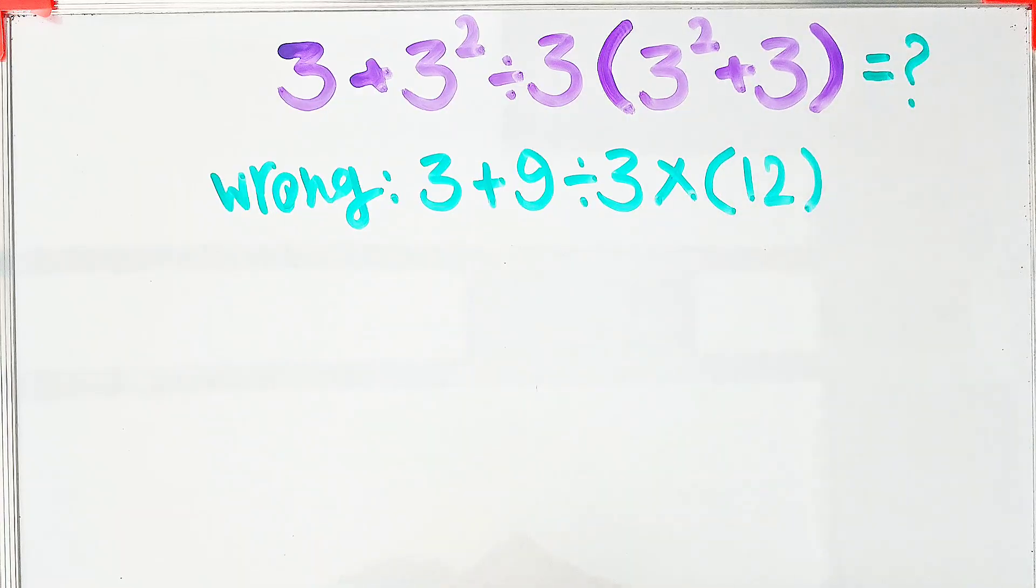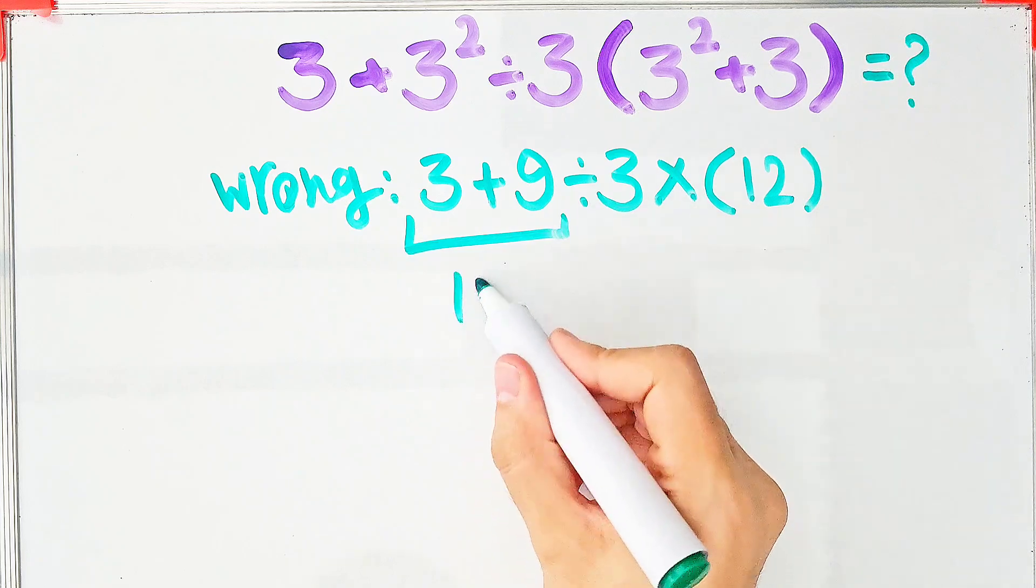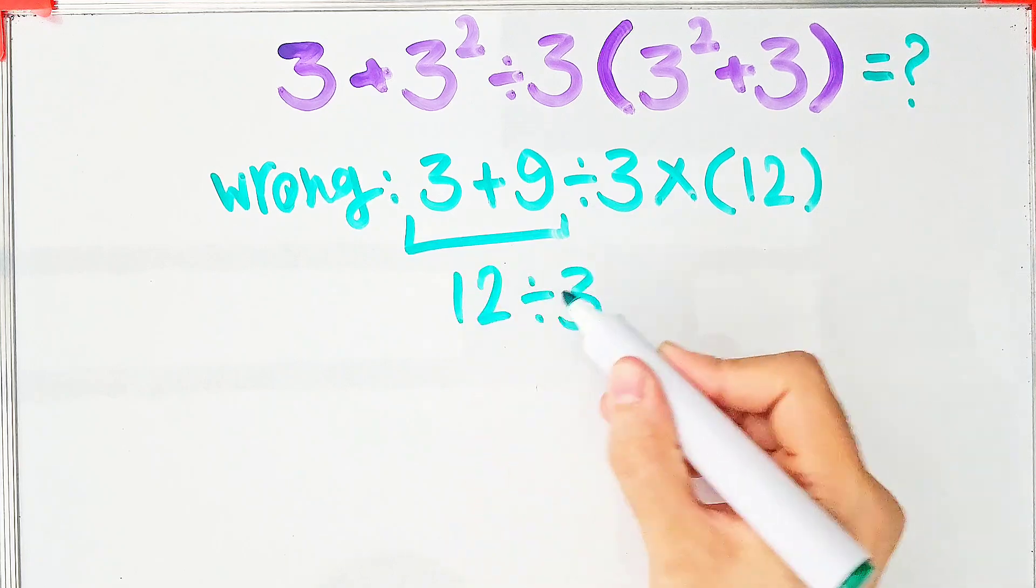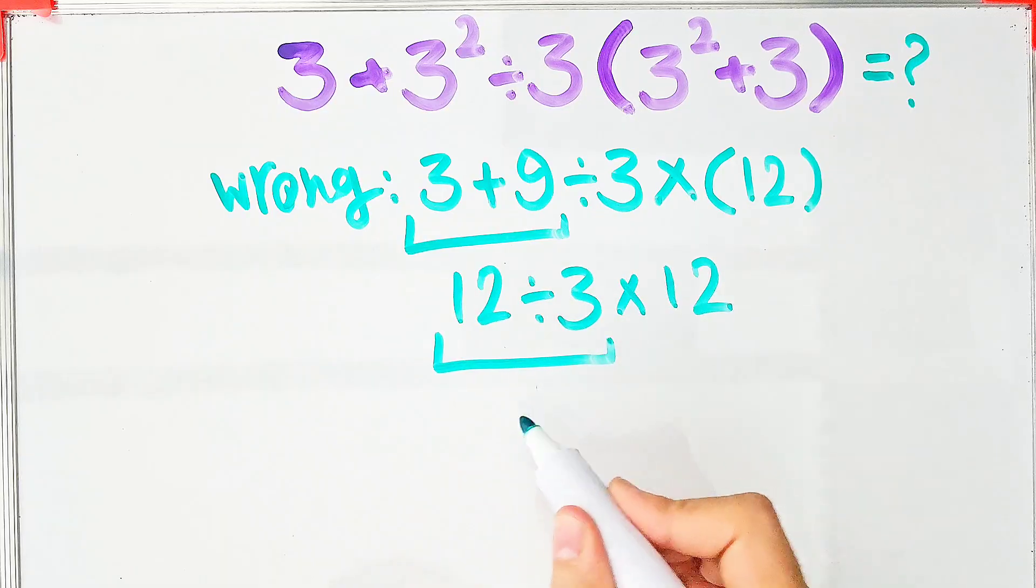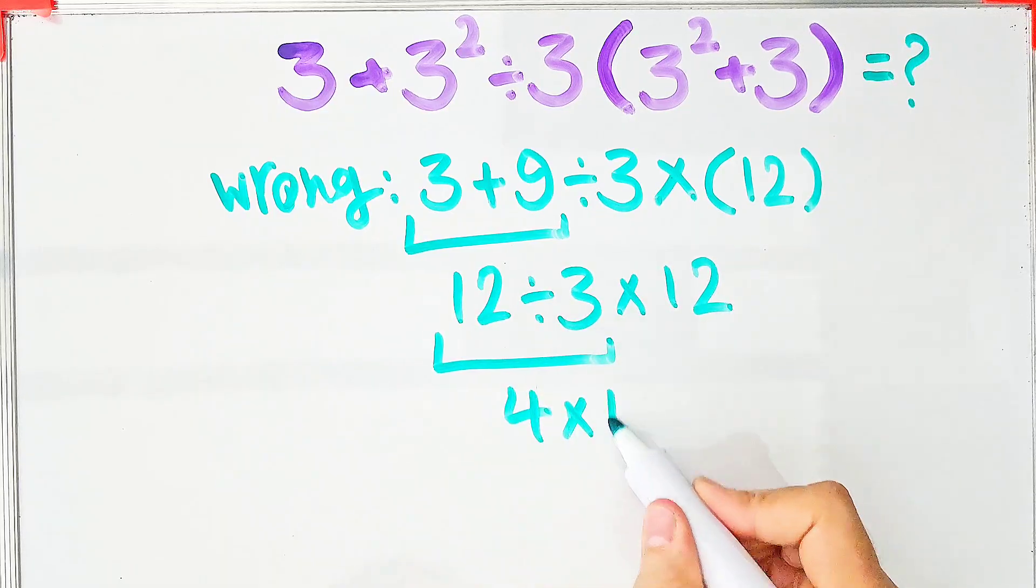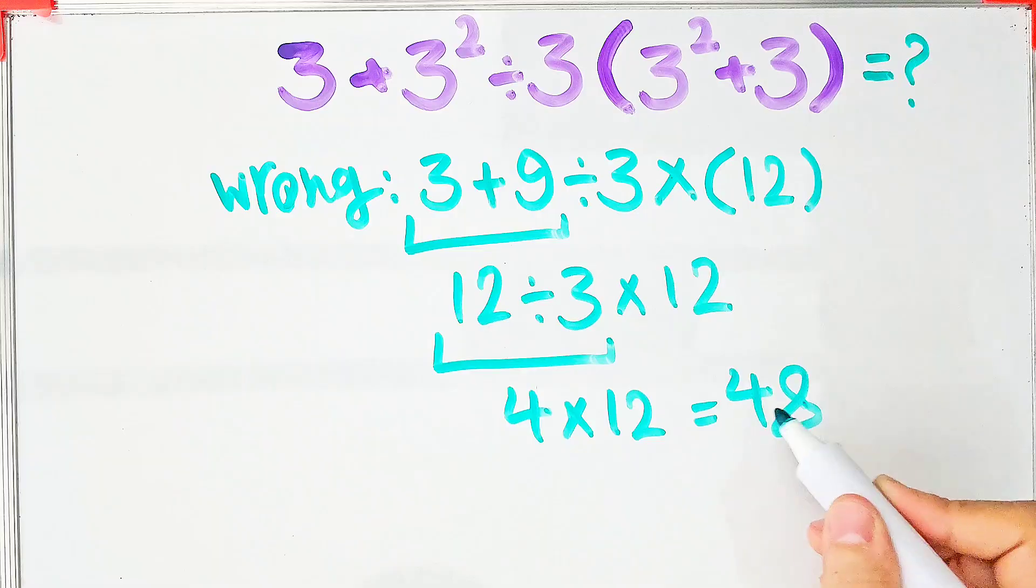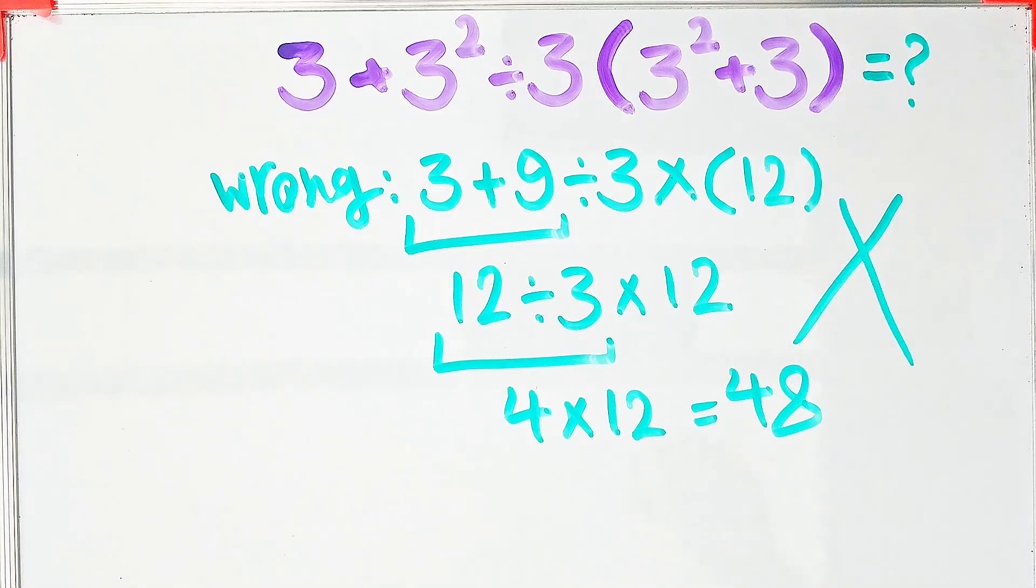Again, they start from the left and simplify the question. 3 plus 9 equals 12, 12 divided by 3 then times 12. 12 divided by 3 equals 4, and 4 times 12 equals 48. But this answer is definitely wrong.